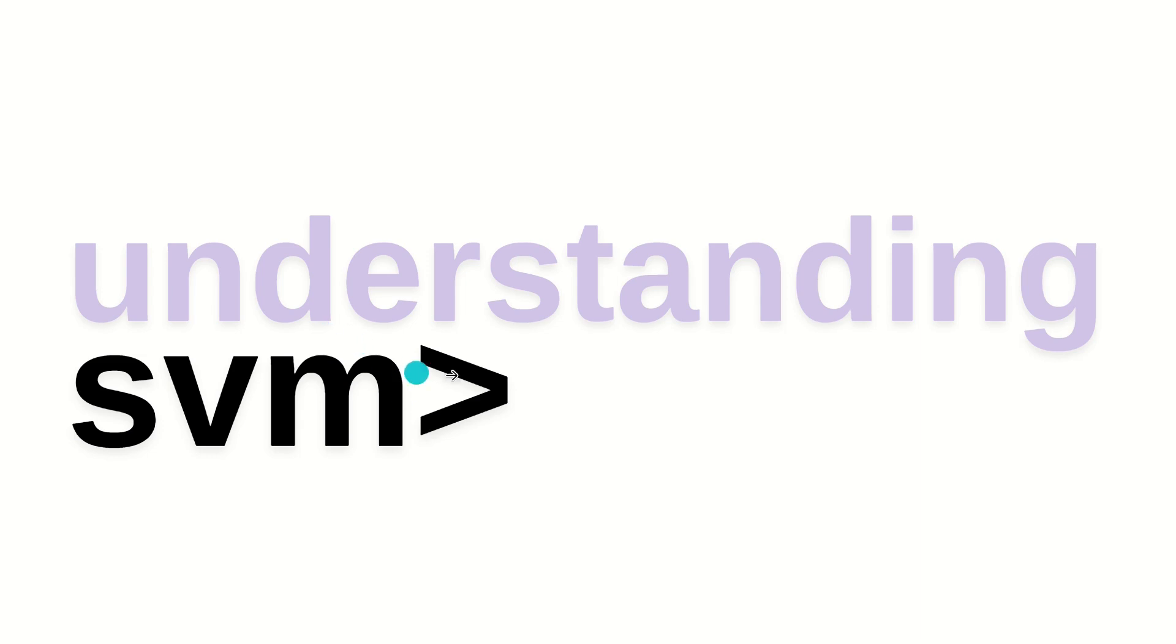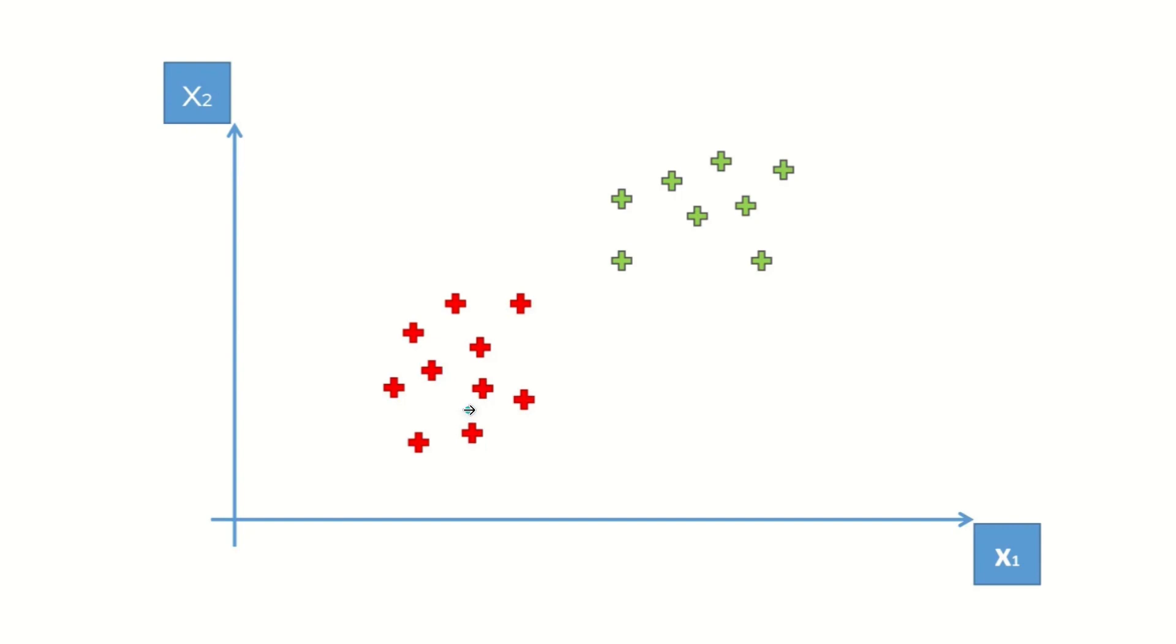So for now, let's understand how SVM actually work. Here we have points on a two-dimensional space, and for simplicity's sake, we have just two columns x1 and x2 and we have some observations. Now we have to derive a line that is going to separate these two classes. So how can we actually separate these points?